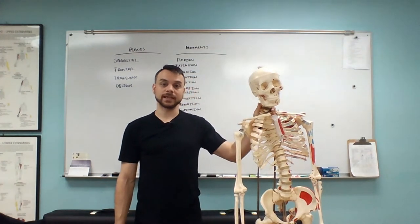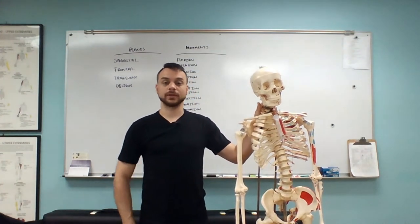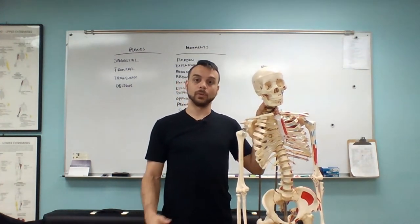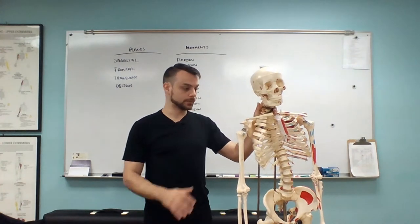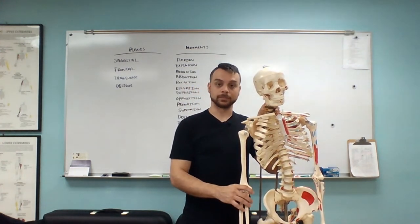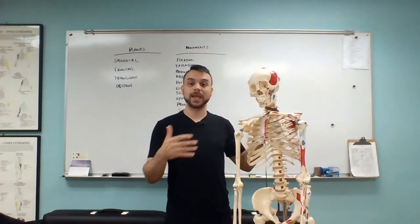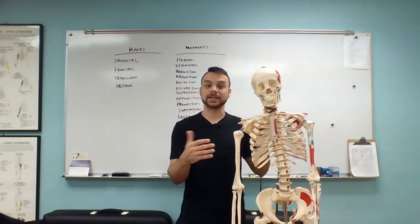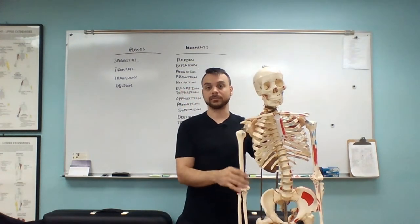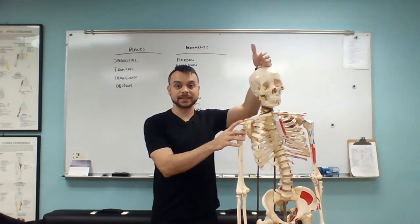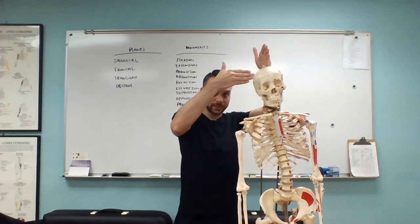When it comes to the planes, the joints, and all this movement, it all works together. Joints will move, their bones will move, and the movement occurs in the plane. The origination of the movement comes in at an axis. So we have these planes, which are like imaginary panes of glass that cut our body into certain parts, and then the axes come in at a perpendicular angle.